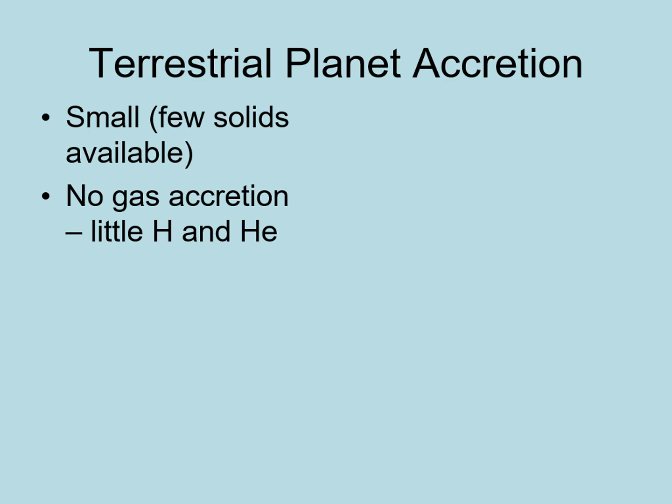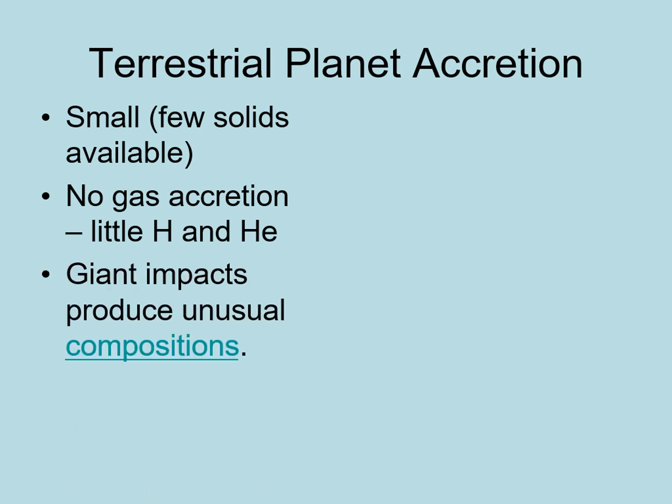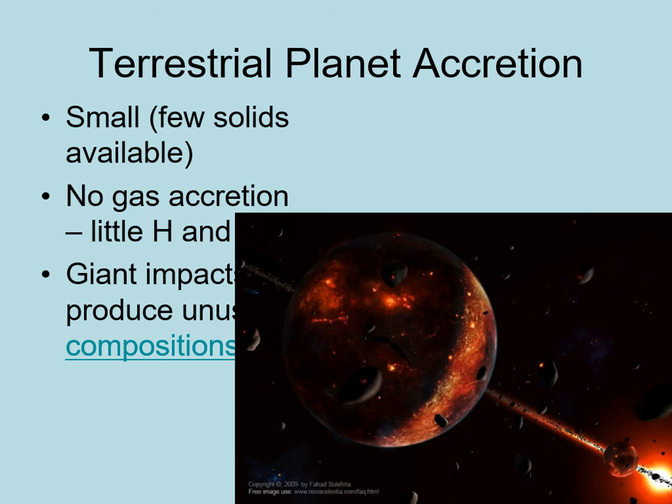When we discussed accretion earlier, we also pointed out that the largest impactors were the size of small planets. When the planets they hit are also this size, the results can be even more dramatic than simply changing a planet's tilt. This video shows a simulation of a collision between two bodies — one the size of the Earth and the other the size of Mars. The smaller Mars-sized body is destroyed in the impact, with most of its mass accreted by the larger body. However, some of the rocky mantle of the smaller body remains in orbit, where it can later accrete to form a moon. This moon has almost no iron, since the iron core of the impactor was accreted by the larger body.